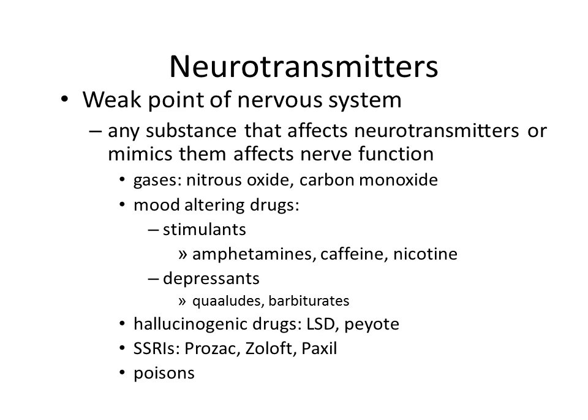Neurotransmitters are the weak point of the nervous system because they have to cross a gap, and things that affect the gap will affect the nervous system and the neurotransmitters. Any substance that affects the neurotransmitters or mimics them affects nerve function. This includes gases such as nitrous oxide or carbon monoxide, or other mind-altering drugs such as stimulants like caffeine and nicotine, and they are associated with different drugs and different poisons.